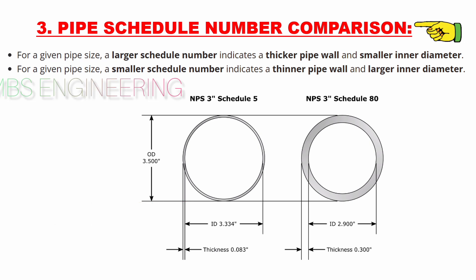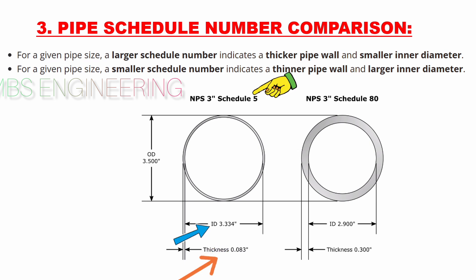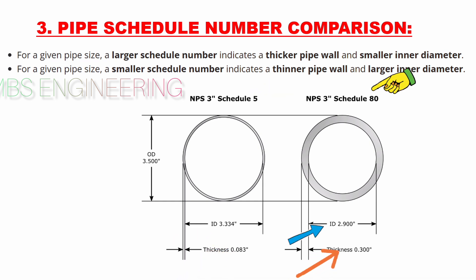Next, we will understand the pipe schedule number comparison. Please refer to the image of a three-inch pipe shown with different schedule numbers such as Schedule 5 and Schedule 80. A smaller schedule number indicates a thinner pipe wall and a larger inner diameter. For example, the three-inch pipe with Schedule 5 has a thinner wall and a larger inner diameter. Conversely, a larger schedule number indicates a thicker pipe wall and a smaller inner diameter — as seen with the three-inch Schedule 80 pipe.